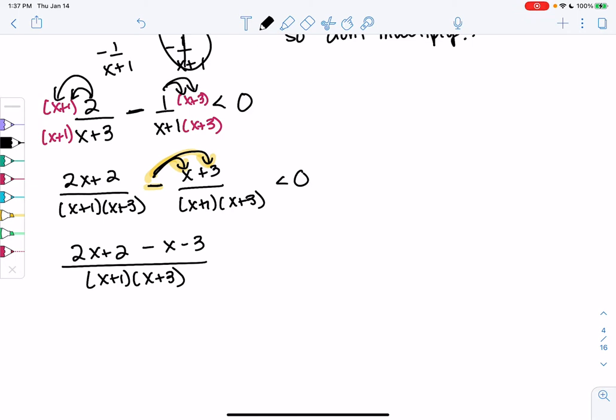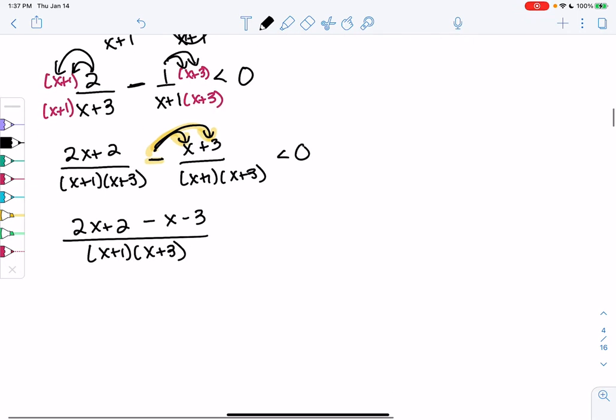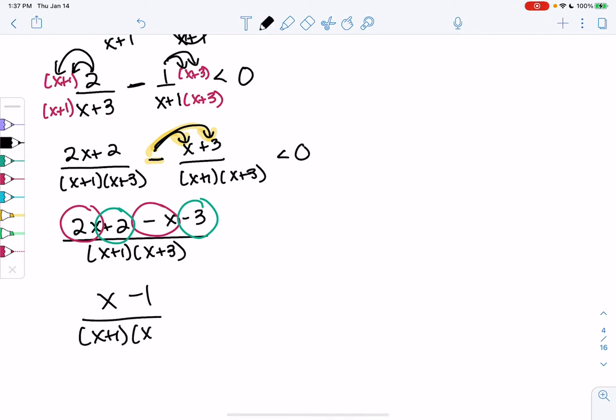We'll combine like terms. So 2x minus x gives me x. 2 minus 3 gives me minus 1. So x minus 1 on top. And then we have x plus 1 and x plus 3, all less than 0.